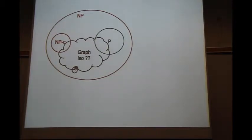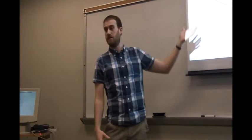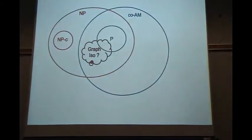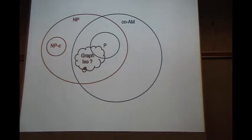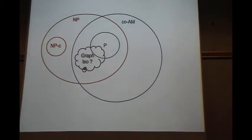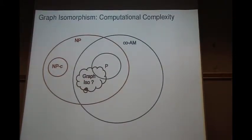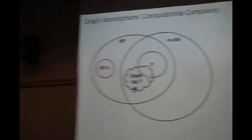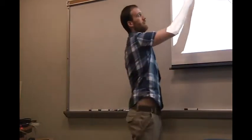Graph isomorphism was one of the problems that when NP was first defined, the question was: where does it lie in this picture? We still don't know too much about it, but we do know a little bit more. We know that it lies inside a class called CoAM, which means we believe it is not NP-complete. So it is likely not NP-complete, but we still don't know whether it's in P or not. This is really the only natural problem with this complexity status. If P is different from NP, we know there are infinitely many classes in between, so it could lie somewhere in there.